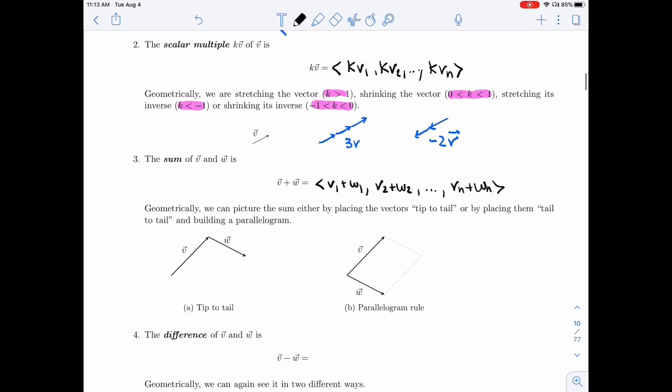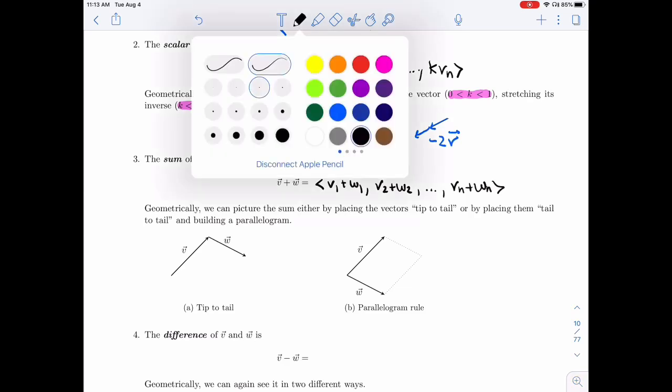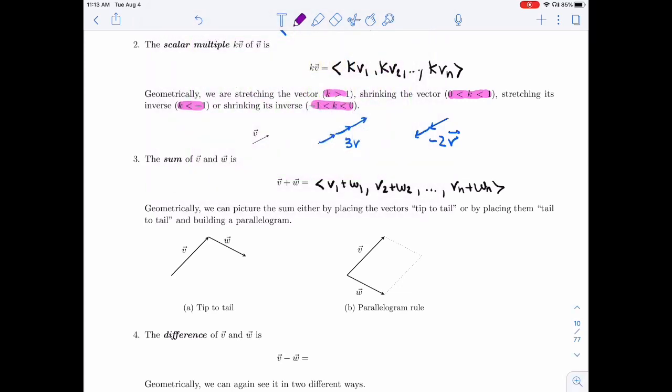Geometrically, this is very interesting. We can picture the sum in two different ways. So the first one is tip to tail. This is a lot like the one we had on the first page. I'm going to start at the start of V, and I want to do both displacements.